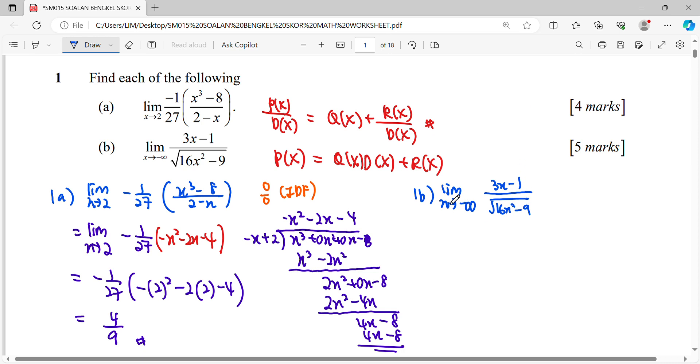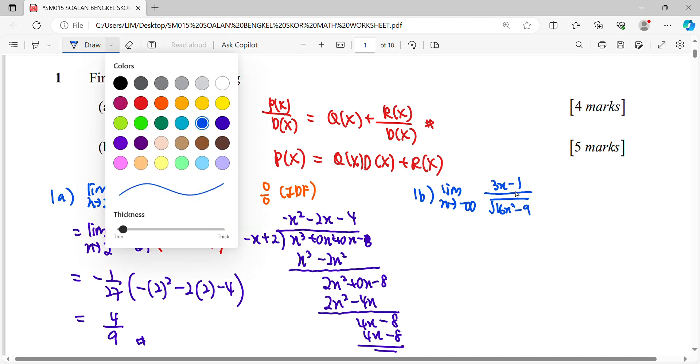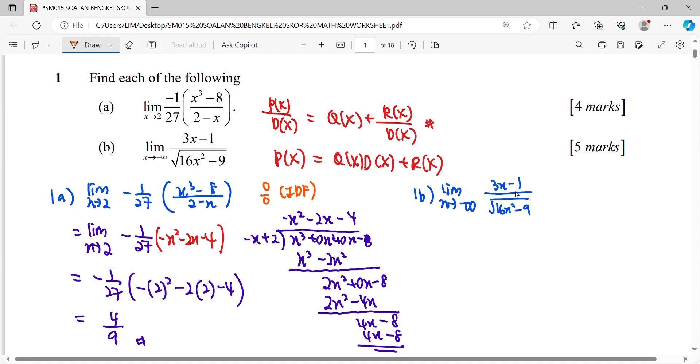So for question B, when you have limit X approaches infinity, try to substitute your infinity. When you substitute infinity, infinity times 3 minus 1 infinity, infinity square times 16 minus 9, also infinity. So indeterminate form. So what we need to see here is how to find the limit infinity for indeterminate form.